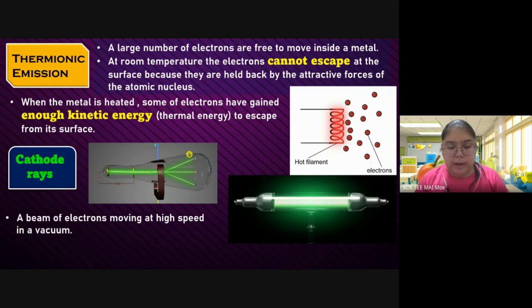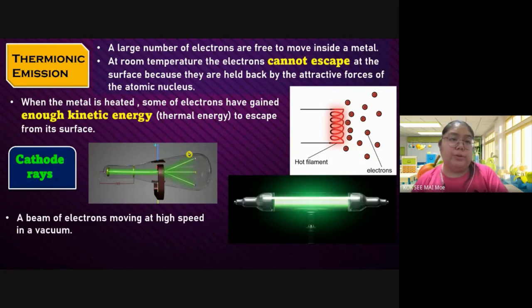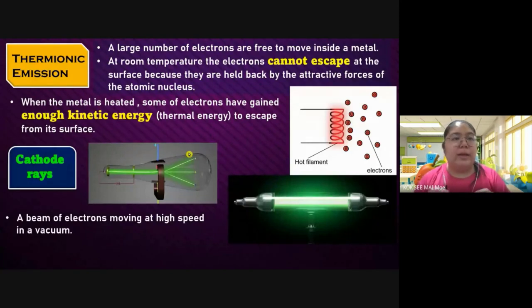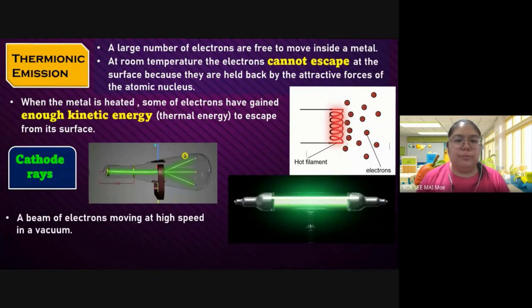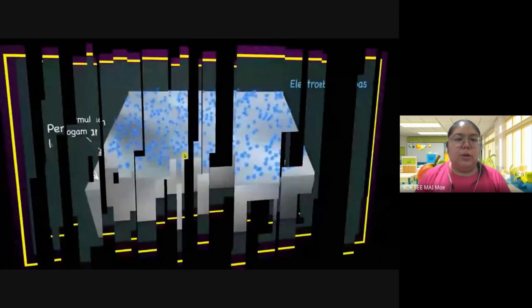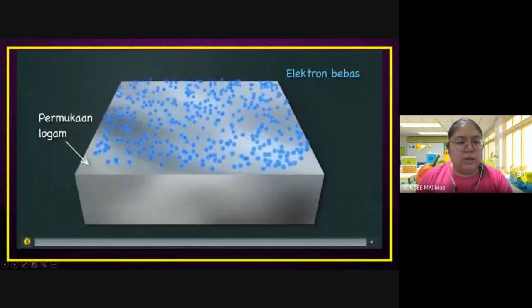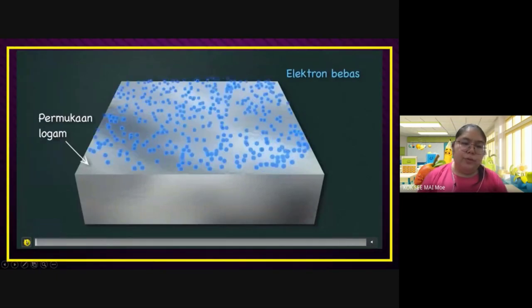If there is no thermionic emission, actually we cannot say we have cathode ray. You must create the electron to produce first. Then after that, when they come out together, they produce one light — just like a light beam — moving at high speed in the vacuum. We're going to see some video, but this one is in Malay, so later I'll explain.